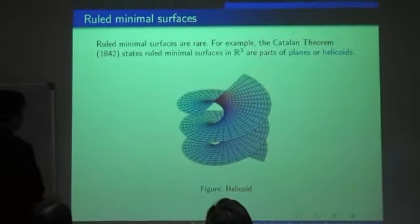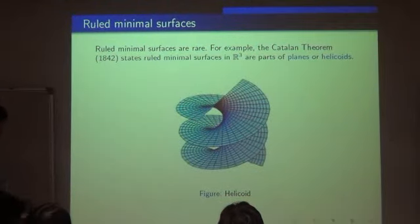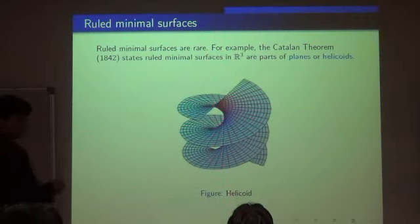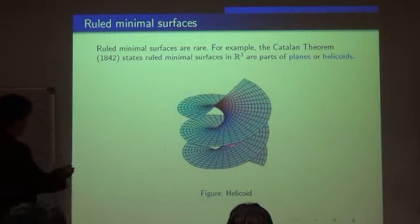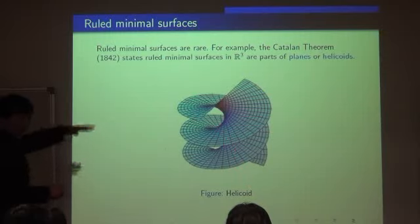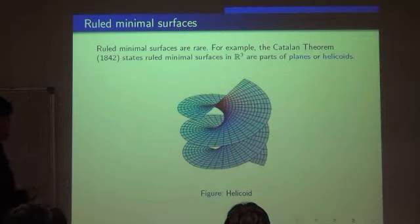This is an example of a ruled minimal surface in R³. By the well-known theorem of Catalan, this surface has a line which will be the axis of the screw motion. The ruling geodesic is orthogonal to that axis. Taking the image of this ruling geodesic under the screw motion gives the helicoid. This will be the rough definition of a helicoid in my talk.